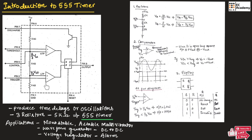The non-inverting comparator operates opposite to the inverting comparator. If the input is greater than the reference, the non-inverting output will be high, and if the input is less than the reference, the output of the non-inverting comparator will be low.